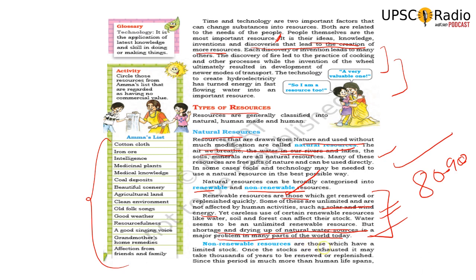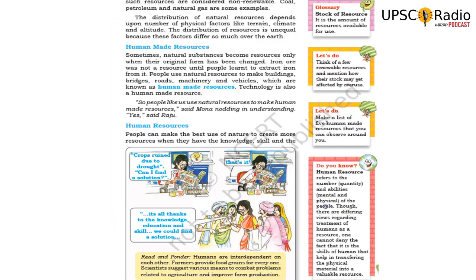Non-renewable resources are those which have limited stock. Once the stocks are exhausted, it may take thousands of years to be renewed or replenished. Coal and crude oil, once used, are gone. It takes thousands to crores of years to reform, and there is no guarantee we will be around by then.